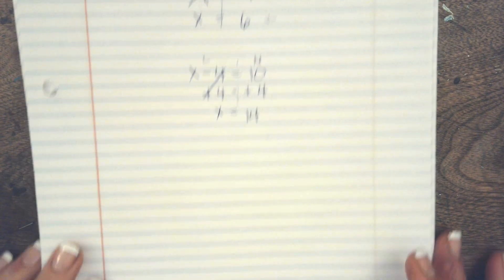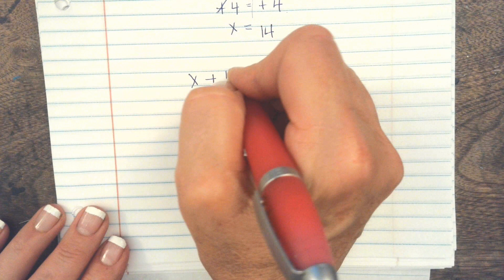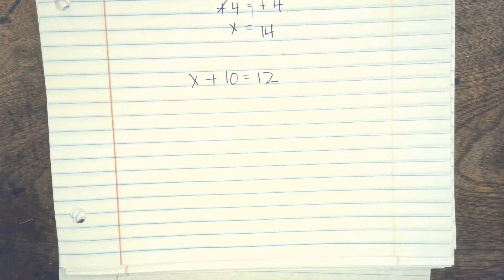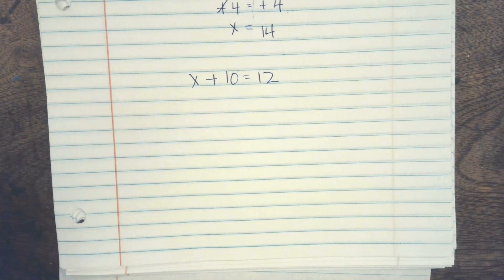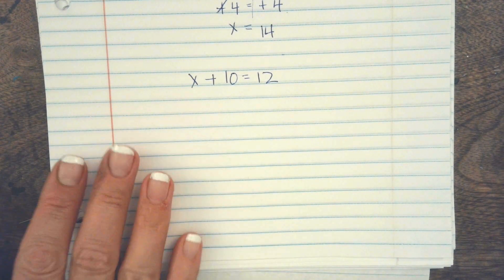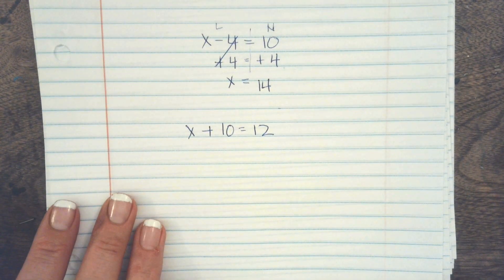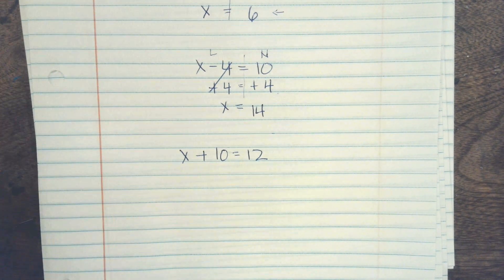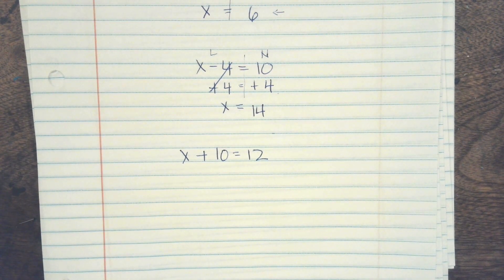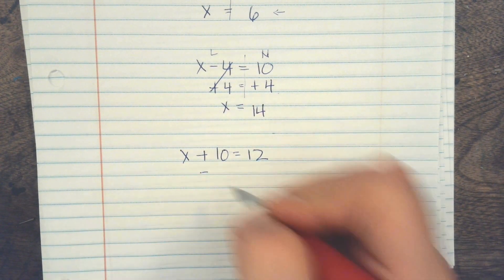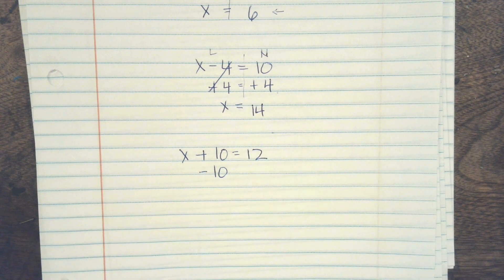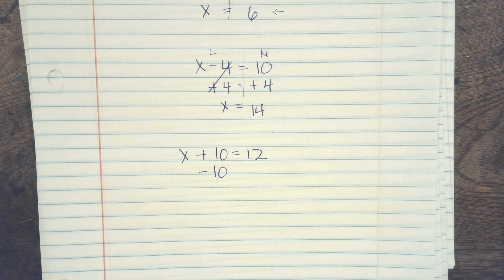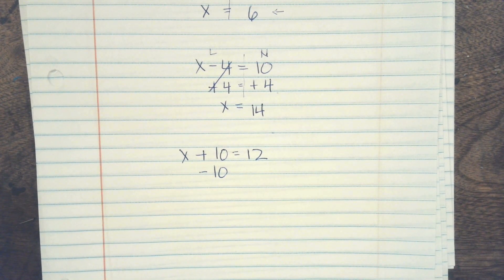So I'm going to have you do x plus 10 equals 12. We already know it's 2, but lead me through the process. So what is my first step? First, you subtract 10. And then it equals 12.